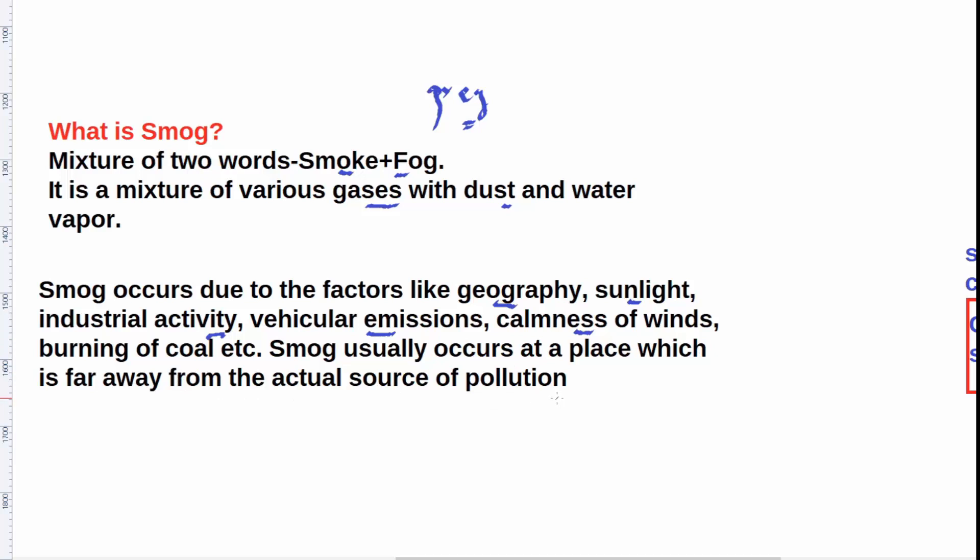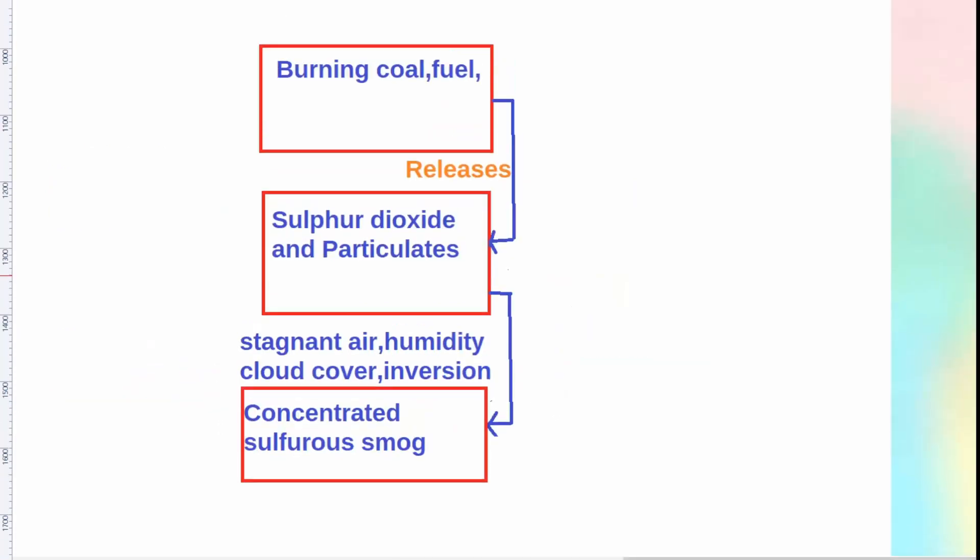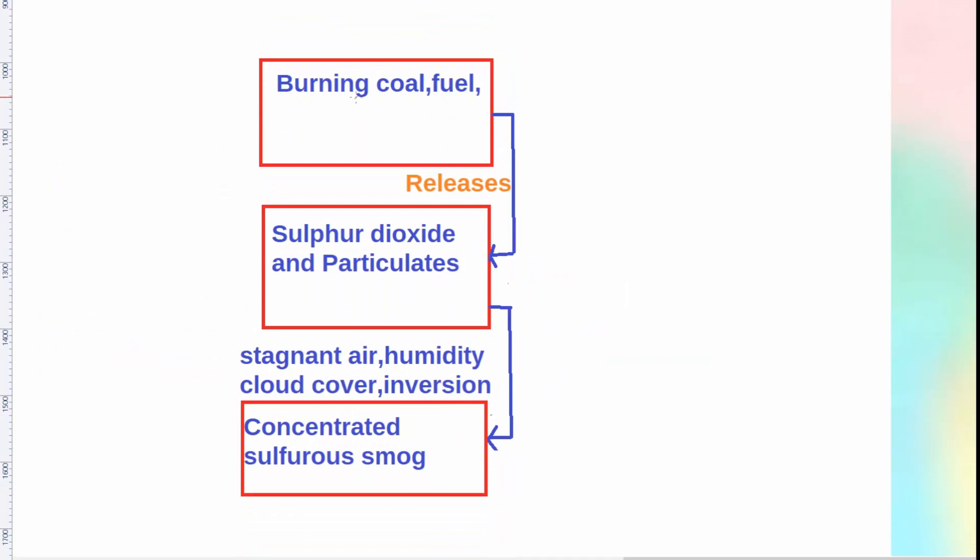We can understand it through a simple diagram. First, burning of coal and fuel releases sulfur dioxide and particulates. And then due to stagnant air, humidity, cloud cover or due to inversion of temperature, concentrated sulfurous smog is formed.